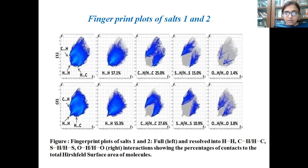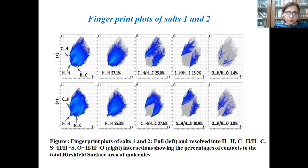This slide represents the fingerprint plots of Salts 1 and 2, which are also part of the Hirshfeld surface analysis. The fingerprint plot gives us the percentage contribution made by various non-covalent interactions towards the total Hirshfeld surface. From the fingerprint plots of the two salts, we conclude that the major non-covalent interaction in both molecules is H···H, which contributes about 57.1% in Salt-1 and 55.3% in Salt-2. The H···H interaction is represented by spike-like features, and the least contribution in both salts is made by the O···H interaction, contributing about 1.4% in Salt-1 and 3.8% in Salt-2.